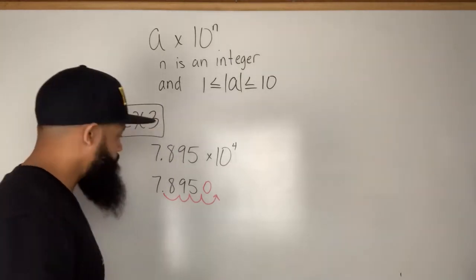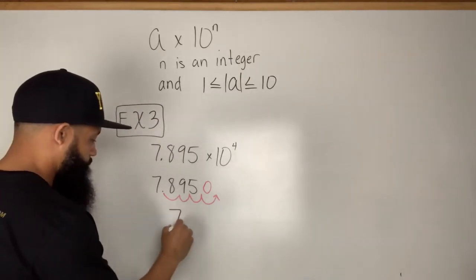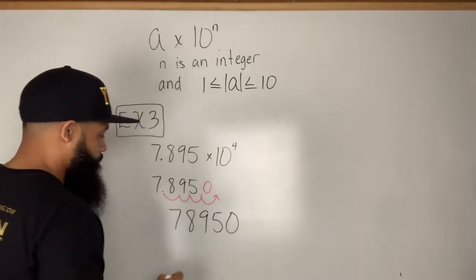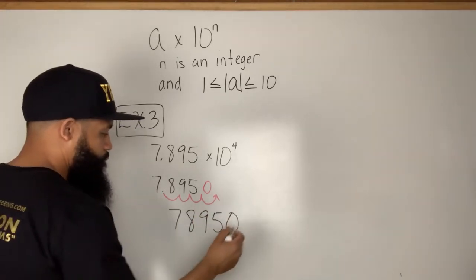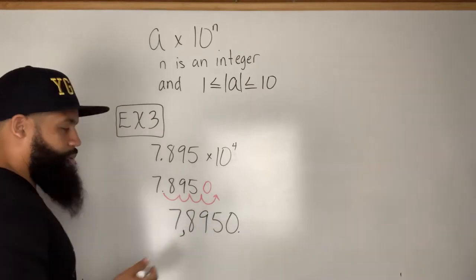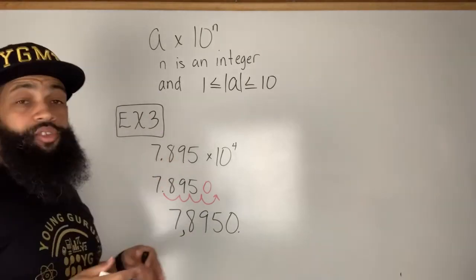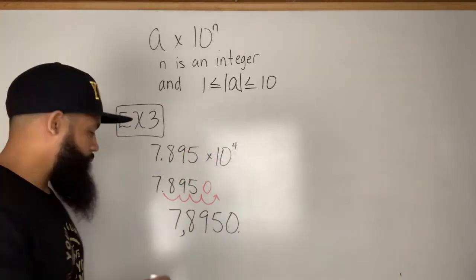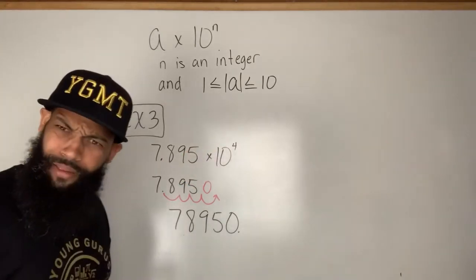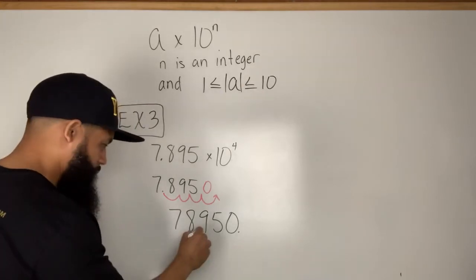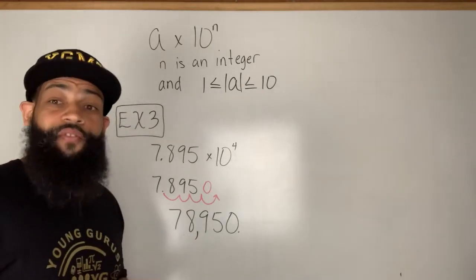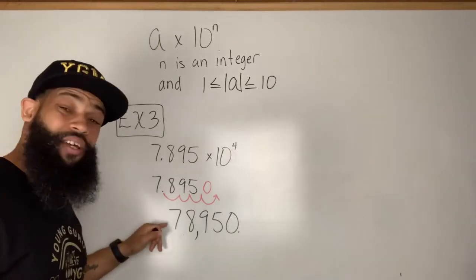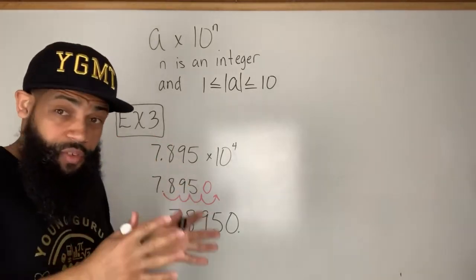I fill that gap with a zero, giving me 78950. I put my decimal after the last digit and add a comma — so 7.895 times 10 to the fourth power equals seventy-eight thousand, nine hundred fifty. That's scientific notation to standard form for a very large number.